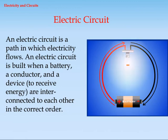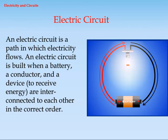Electric circuit. An electric circuit is a path in which electricity flows. An electric circuit is built when a battery, a conductor, and a device to receive energy are interconnected to each other in the correct order.